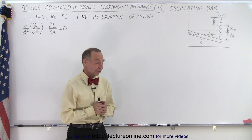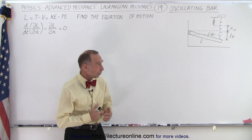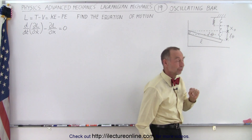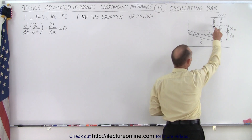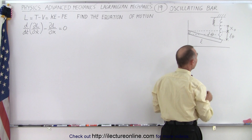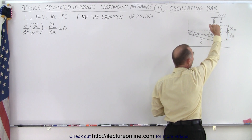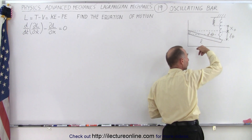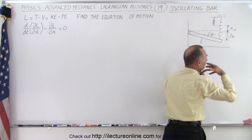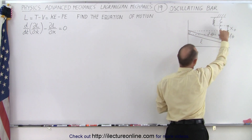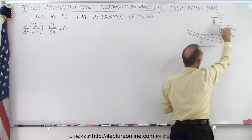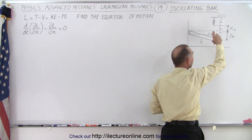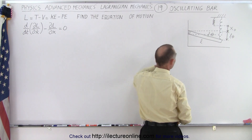Welcome to iLecture Online. The examples are becoming more interesting. We have a bar which can hinge on one end and is supported by a spring on the other end. Initially the spring does not reach all the way down to the bar — that would be its natural length. When you attach the spring, the weight of the bar pulls it until the torque from gravity and the torque from the spring reach equilibrium, which occurs when the bar is horizontal. Once you pull the bar down and let go, it oscillates, and we want to find the equation of motion.